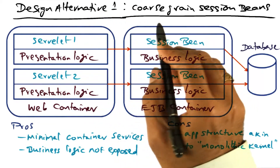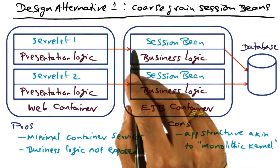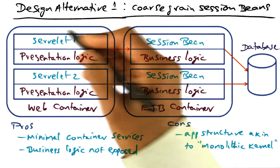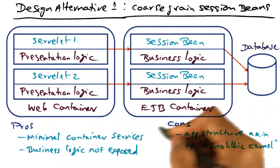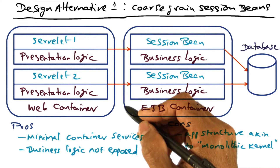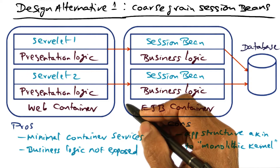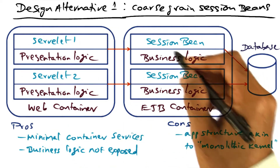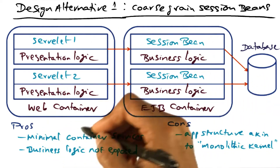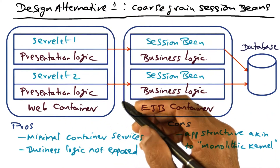The first design alternative we're going to look at is using coarse grain session beans. In this structure, we're only looking at the web container and the EJB container, because the applet container that interfaces with the client is in the web browser. We'll talk only about how we structure the web container and the EJB container in the different design alternatives.